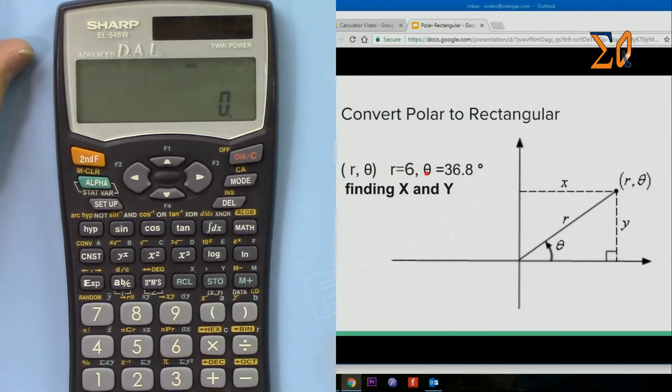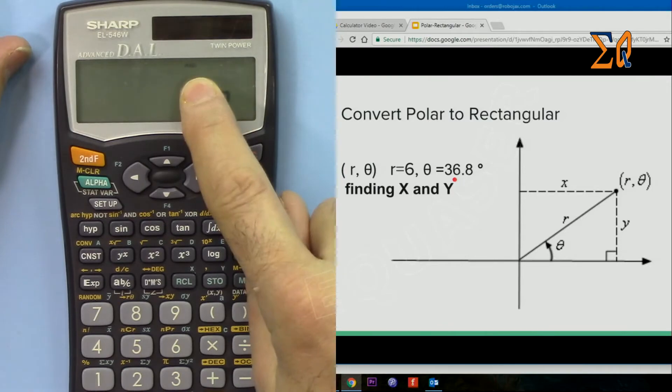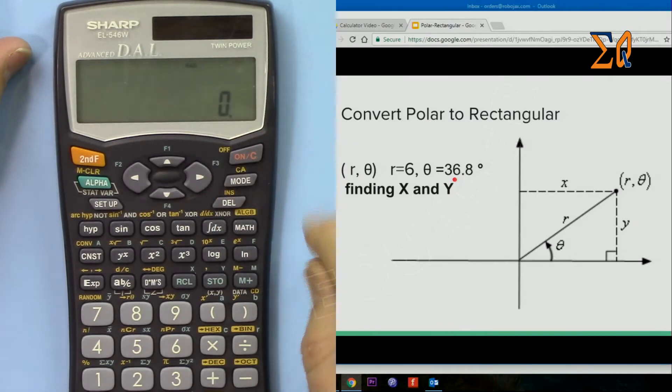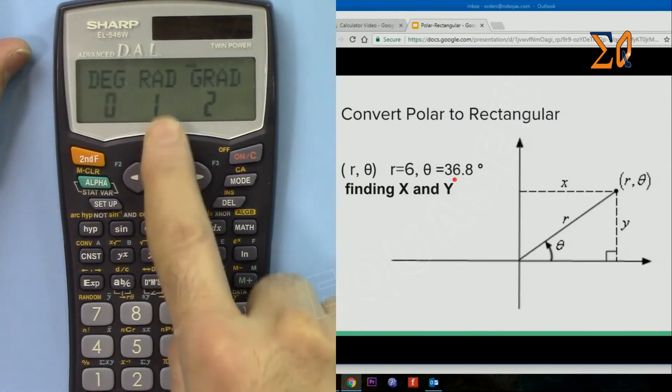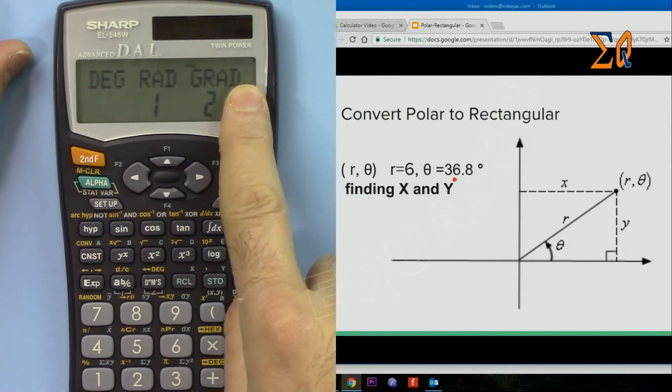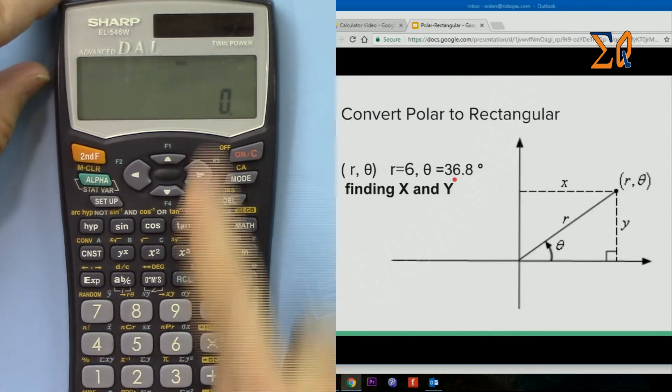Because the angle is in degrees, this is in radians, let's switch it to degree. So press setup and then zero, and then here degree, radian, gradient. So zero is degree, so now we are in degree mode.